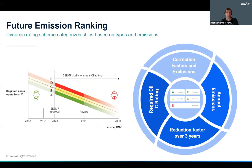Having a closer look at the CII, here's a nice visualization of how the required operational CII schema is developing over the years. You can clearly see that it gets narrow. In 2025, that's the first review planned. Within the period from 2023 to 2025 there's an annual CII rating followed by EEMP audits. The yellow area is the middle of area C, where vessels are required to stay in.